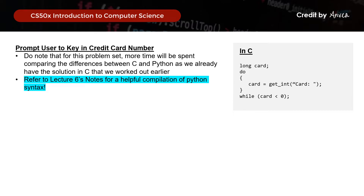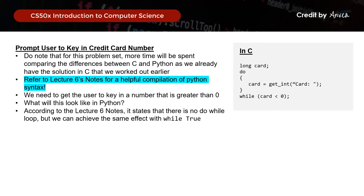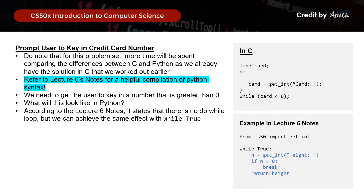For this step, what we want to do is to get the user to key in a number that is greater than 0. In C, we used a do-while loop — this means we'll keep running the prompts for the user to key in the input as long as the input received is less than or equal to 0. So what will this look like in Python? According to the Lecture 6 Notes, while there is no do-while loop in Python, we can actually achieve the same effect with 'while True.'